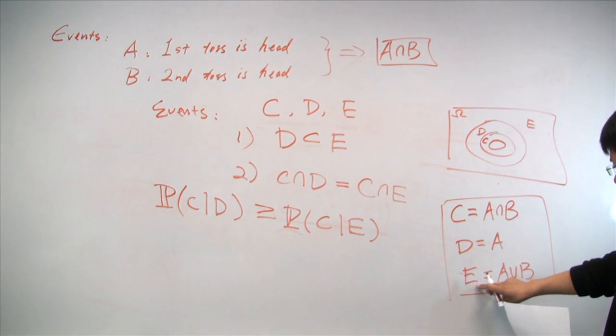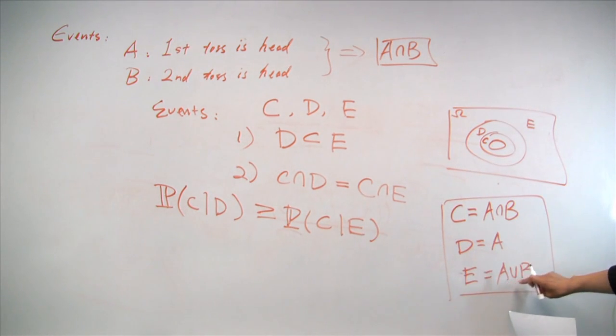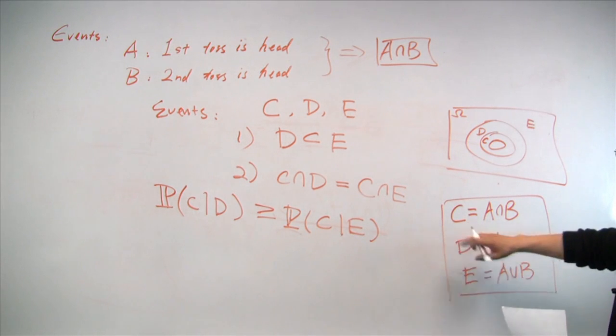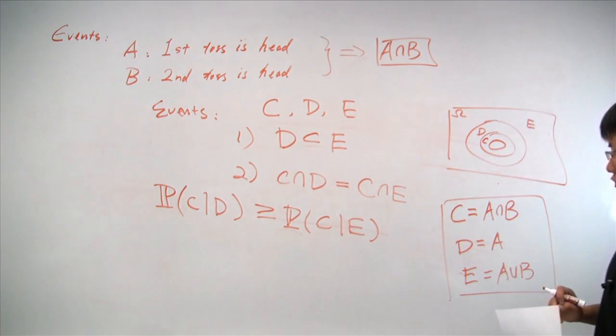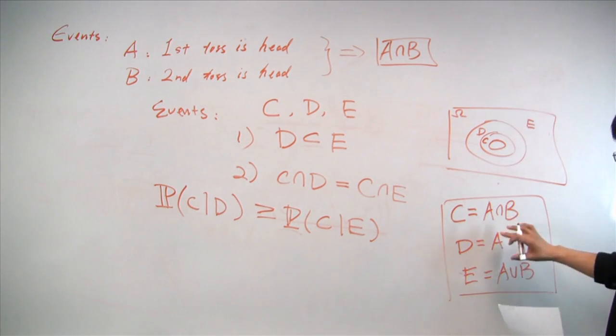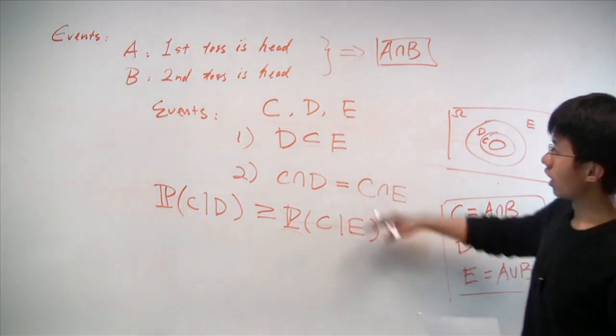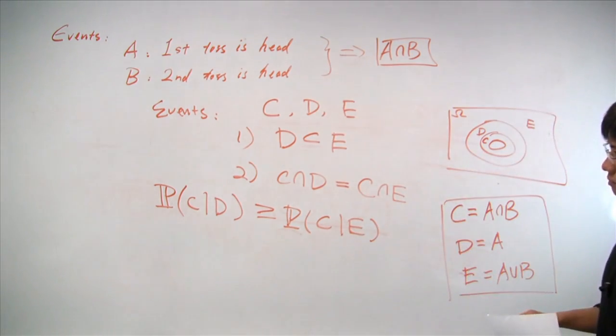We can verify that indeed these conditions are true. Namely, D is a subset of E, because A is a subset of A union B. And C is a subset of both D and E. And hence, condition 2 is also true. And if that's the case, we will actually recover the result we got earlier for events A and B.